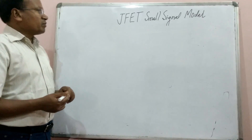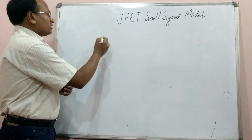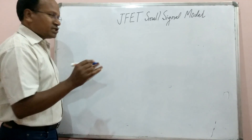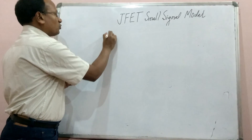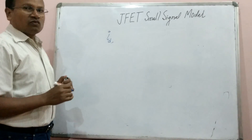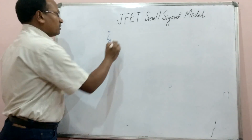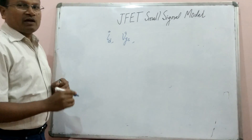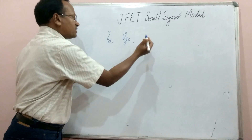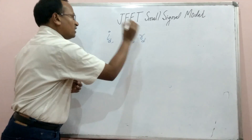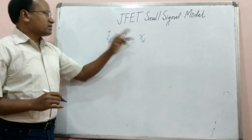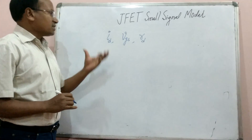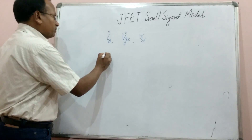We will discuss the small signal model of JFET. We know there are three important terms in JFET, whether N-channel or P-channel. There is drain current ID which flows in the drain, there is voltage VGS, there is voltage VDS, and there is drain-on resistance, small RD. These are three important terms.